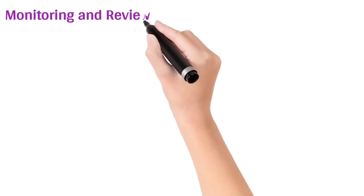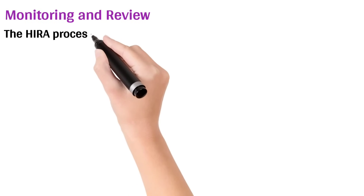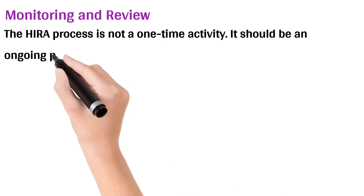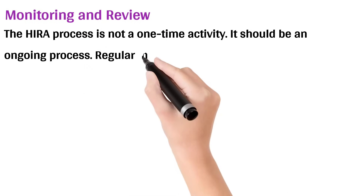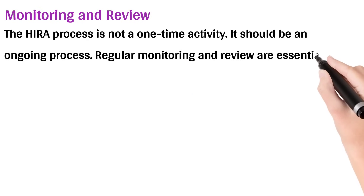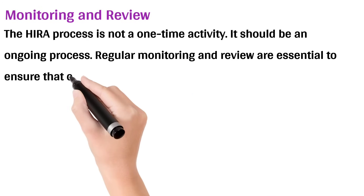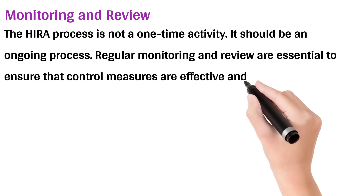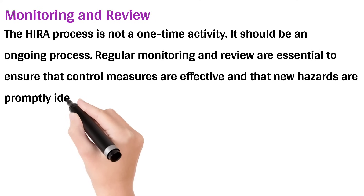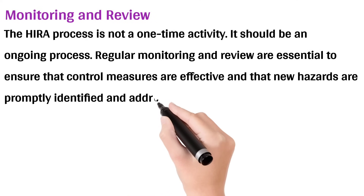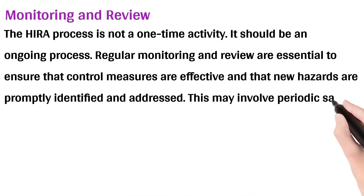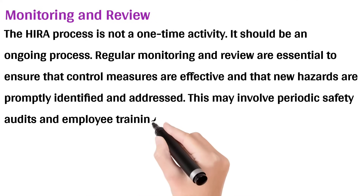Monitoring and Review: The HERA process is not a one-time activity — it should be an ongoing process. Regular monitoring and review are essential to ensure that control measures are effective and that new hazards are promptly identified and addressed. This may involve periodic safety audits and employee training.